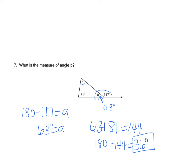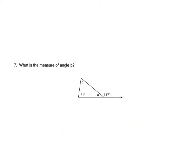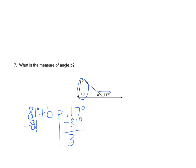The other way: remember we have an exterior angle and its remote interior angles — the ones not adjacent to the exterior angle. Those remote interior angles add up to equal the exterior angle. So 81 degrees plus B equals 117 degrees. Subtracting 81 from both sides gives B equals 36 degrees — same answer, just a shorter method.